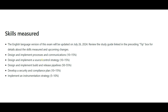This is what the certification measures. 50 to 55 percent of questions are around designing and implementing build and release pipelines — so you have to be very accurate with those concepts. The remaining topics include process and communications, source control, and compliance and security, each at 10 to 15 percent.